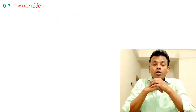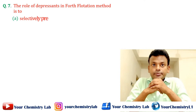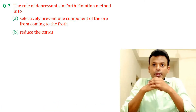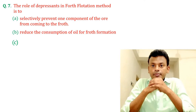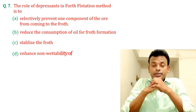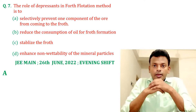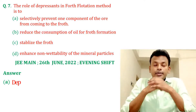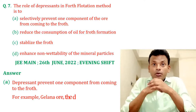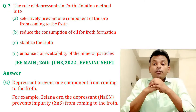Question number seven: The role of depressants in the froth flotation method is to prevent one component from coming to the froth. This question was set in JMN 26th June 2022 evening shift. Answer: Option A is correct. For example, in galena ore, the depressant NaCN prevents the impurity ZnS from coming to the froth.